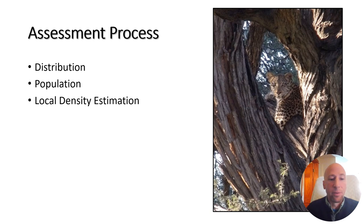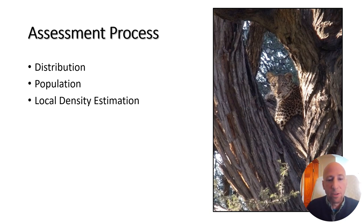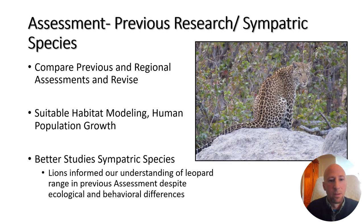The key types of information we use for the assessment are distribution — understanding the full range where the species is present, especially compared to the historic range — population size in a particular area where we have numbers for leopards within national parks or certain regions, and local density estimation, looking at whether densities are high or low relative to expected levels based on habitat and prey availability.